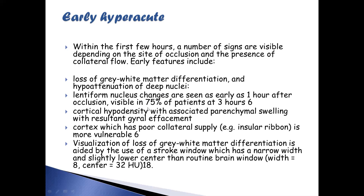Cortical hypodensity with associated parenchymal swelling results in sulcal effacement — there will be hypodensity, parenchymal swelling, and sulcal effacement. The cortex with poor collateral supply is more vulnerable. Visualization of loss of gray-white matter differentiation is aided by the stroke window, which uses a narrow width and slightly lower center than the routine brain window.